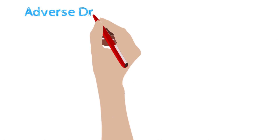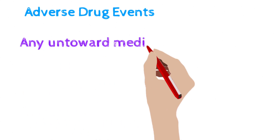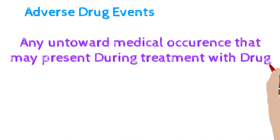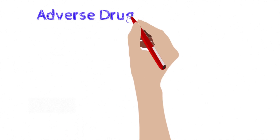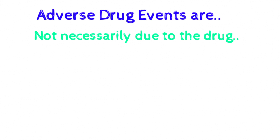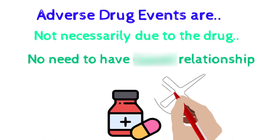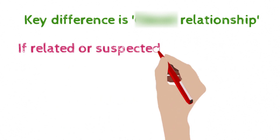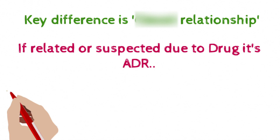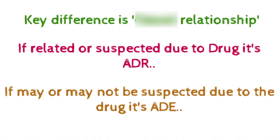Now let's move to adverse drug event. Adverse drug event is any untoward medical occurrence that may present during treatment with a drug, but which does not necessarily have a causal relationship with the drug. In simple language, adverse drug events are not necessarily due to the drug, meaning no causal relationship with the drug is required. The key difference between adverse drug reaction and adverse drug event is the causal relationship with the drug. If causal relationship is related or suspected, it's called an adverse drug reaction. If causal relationship may or may not be suspected, it's called an adverse drug event.